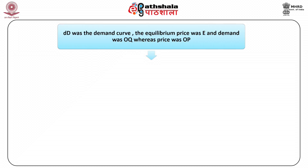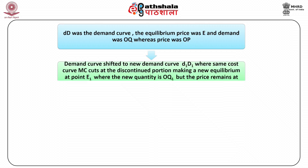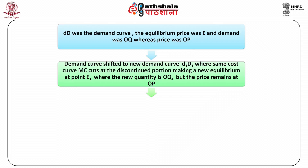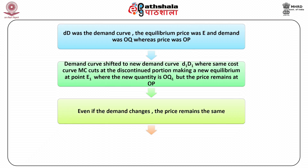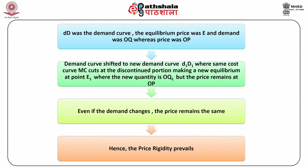Price rigidity also prevails in case of change in demand, which can be explained with the help of a figure. When DD was the demand curve, the equilibrium price was at E, demand was OQ, and price was OP. When demand increased, the demand curve shifted to the new demand curve D1D1, where the same cost curve MC cuts at the discontinuous portion, making a new equilibrium at point E1 where the new quantity is OQ1, but the price remains at OP. Thus, even if demand changes, the price remains the same, and price rigidity prevails.